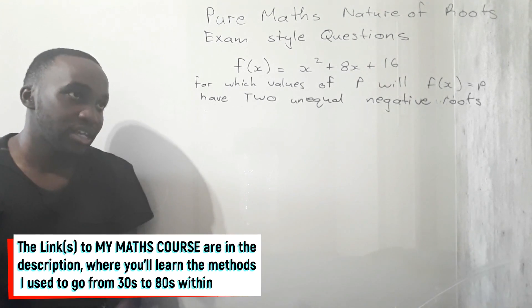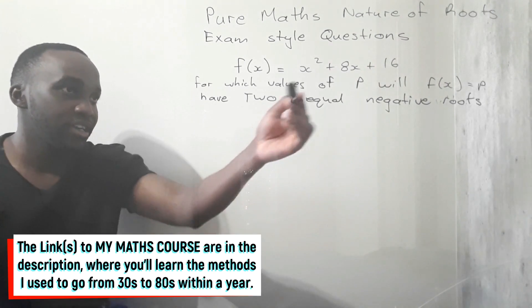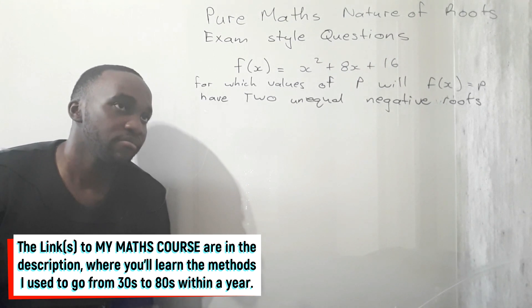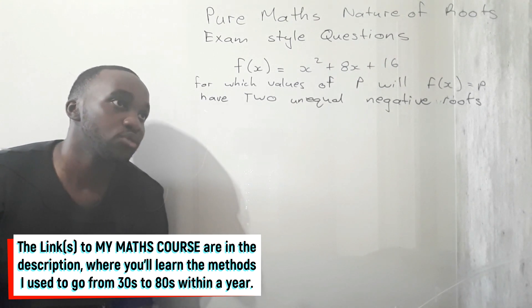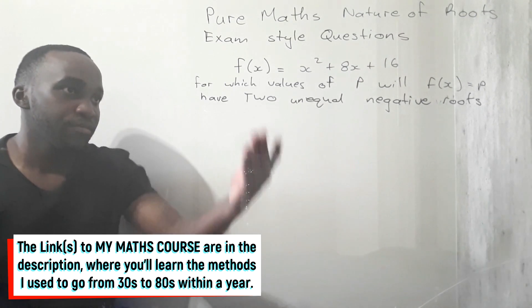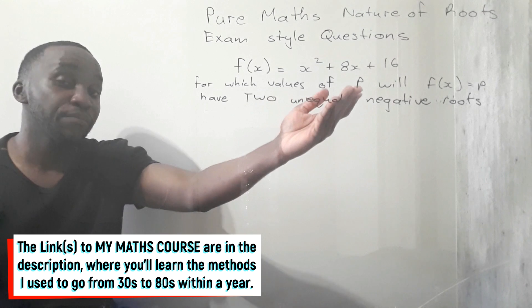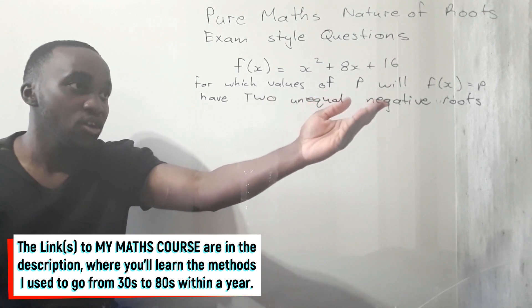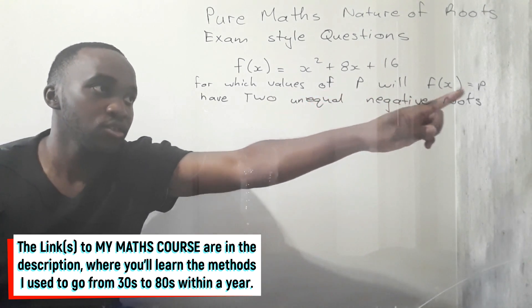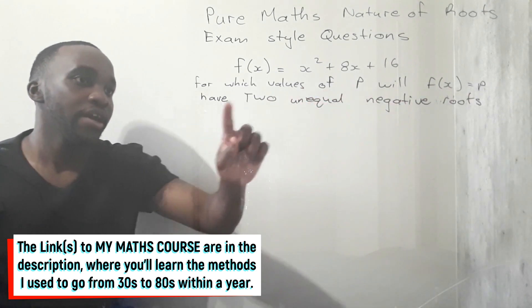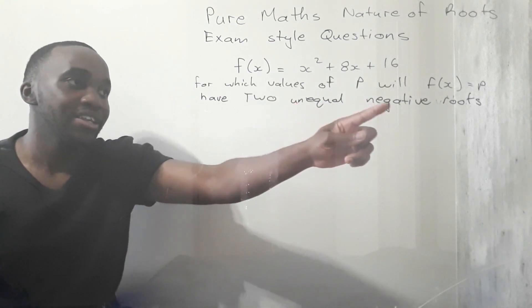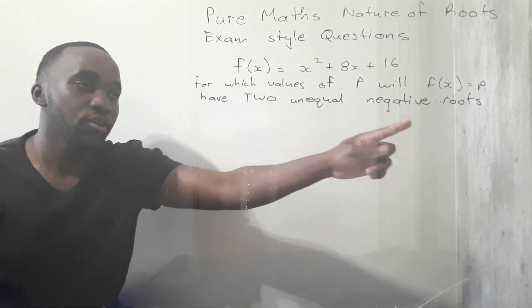When you have a question like this, we're clearly given a parabola here. f(x) is defined, and they are asking: for which values of p will f(x) = p have two unequal negative roots?